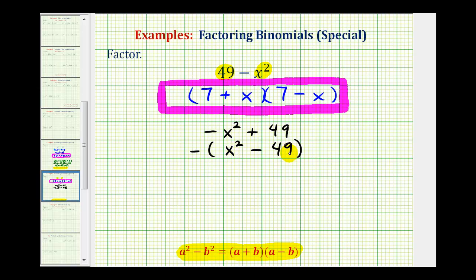And again, this is a difference of squares, so we'd have the opposite of two binomial factors. The two equal factors of x squared are x and x. The two equal factors of 49 are 7 and 7. And again, one's a sum, and one's a difference. So here's another way to completely factor 49 minus x squared.